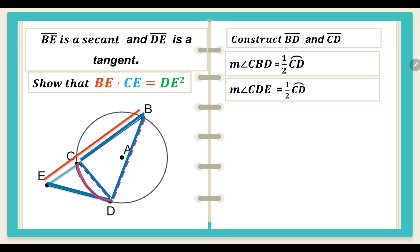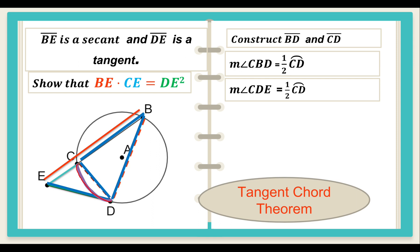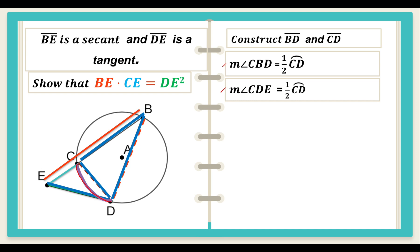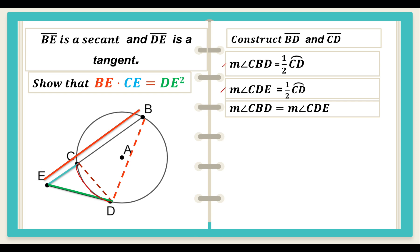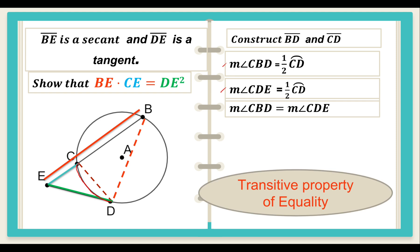By the tangent chord theorem, the measure of the angle on the circle formed by the chord and the tangent is equal to one half the measure of its intercepted arc. By these two statements, both the measure of angle CBD and the measure of angle CDE are equal to the measure of arc CD. So we can state that the measure of angle CBD is equal to the measure of angle CDE, by the transitive property of equality.